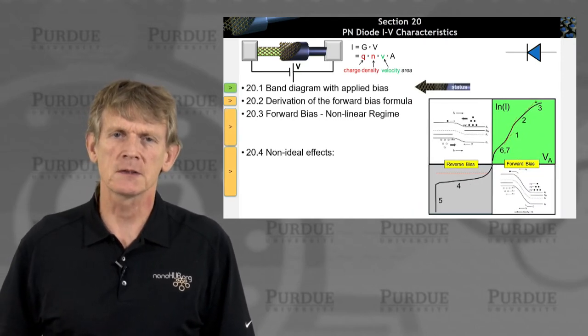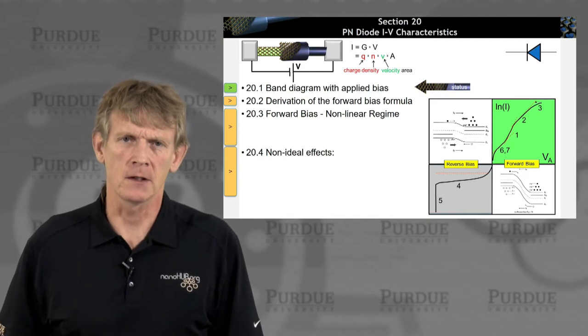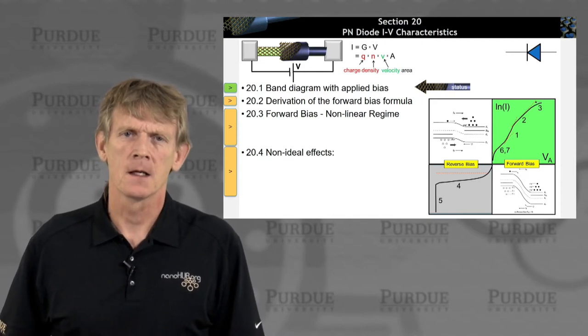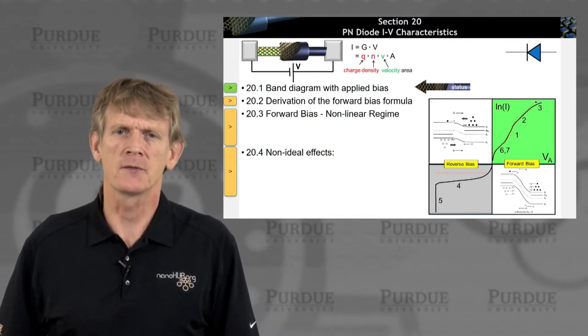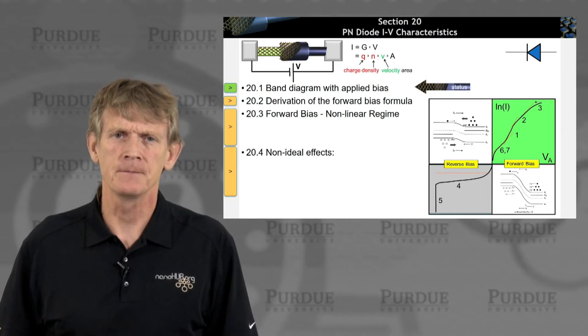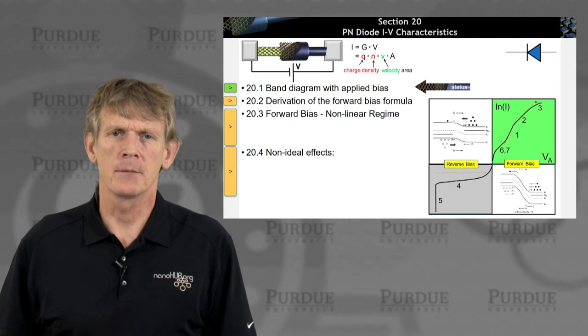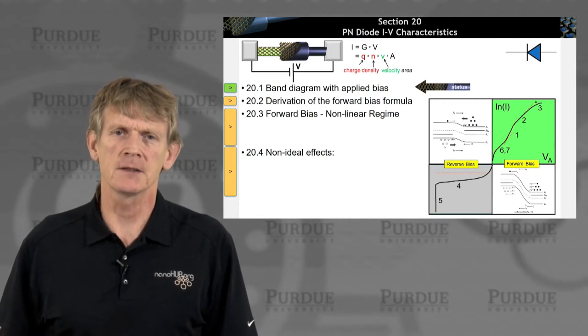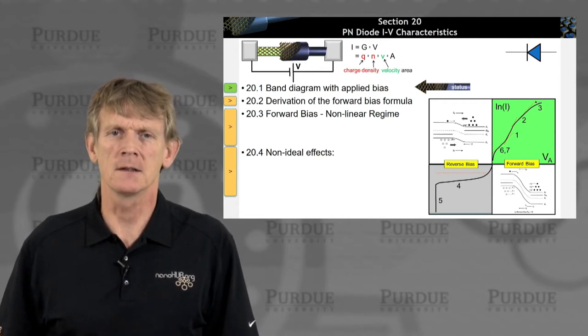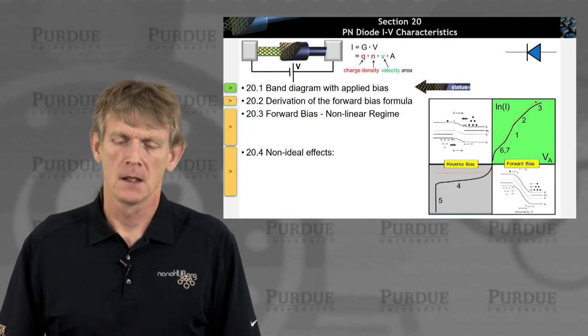First of all, we'll start out with drawing the band diagram, of course. Then we'll derive the forward bias formula. Then we'll look at some nonlinear behavior of the device in the forward bias regime, and then look at some non-ideal effects.